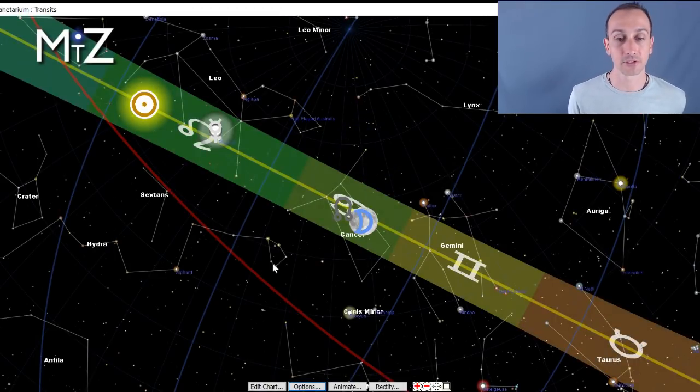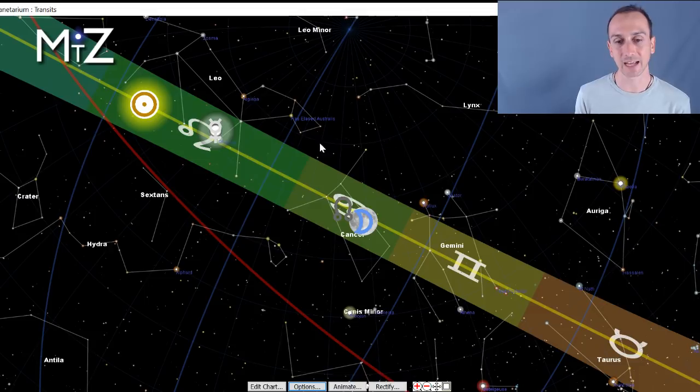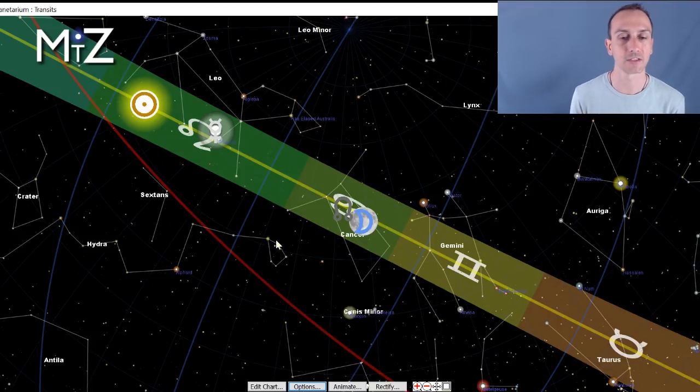Alright, so here's the sky for this Thursday. Again, we are using the actual size of the constellations called True Sidereal Astrology. If you are new to the channel, be sure to check out that link down below for more information.